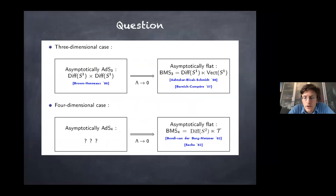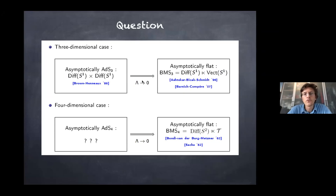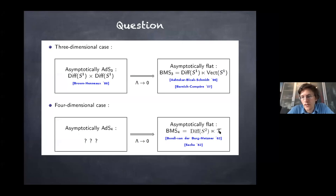The main original motivation of this talk: in AdS we know very well that with Dirichlet boundary conditions we have two copies of the Virasoro algebra, or in terms of group, Diff S1 — obtained by Brown-Henneaux in 1986. In the flat limit, a combination of the two generators gives a Diff S1, and you also get a set of commuting vectors which are super-translations in three dimensions — the BMS3 group. In four dimensions we have Diff S2 and super-translations forming a semi-direct structure. The question is: is there a structure in AdS4 that reduces in the flat limit to BMS4?